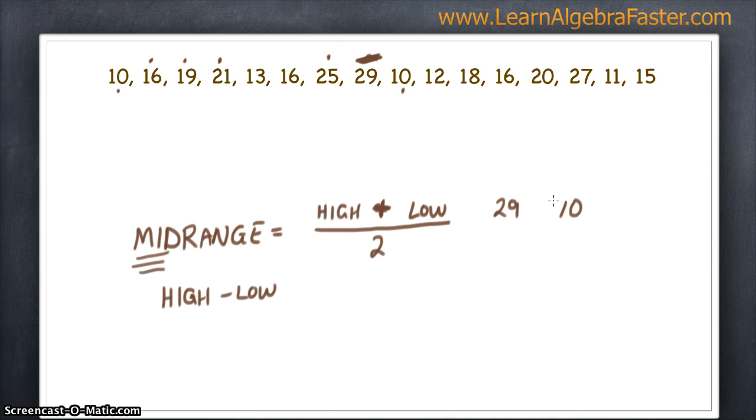Now we want to find the average between these two points, and that's our mid-range. So we need to add them and divide by 2. 29 plus 10 is 39. And 39 divided by 2 actually gives us 19.5. So our mid-range value is 19.5.